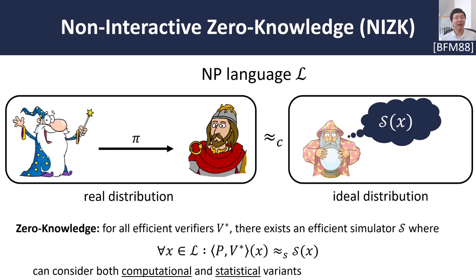Once more, we can consider two possible notions: a computational variant, where zero knowledge only holds against computationally bounded verifiers, and a statistical variant, where zero knowledge should hold even against computationally unbounded verifiers.